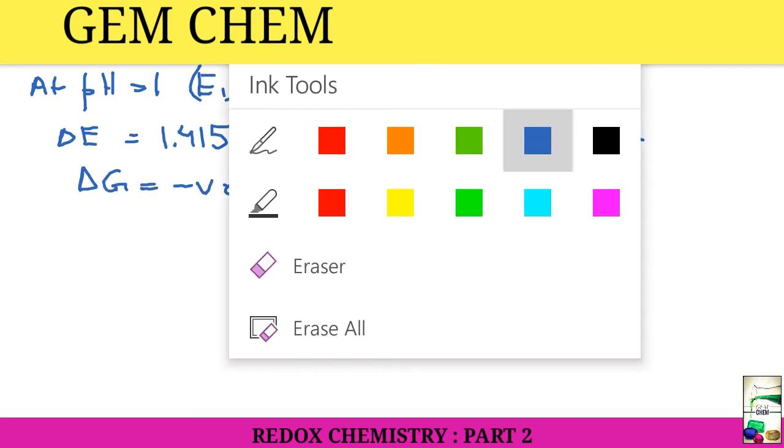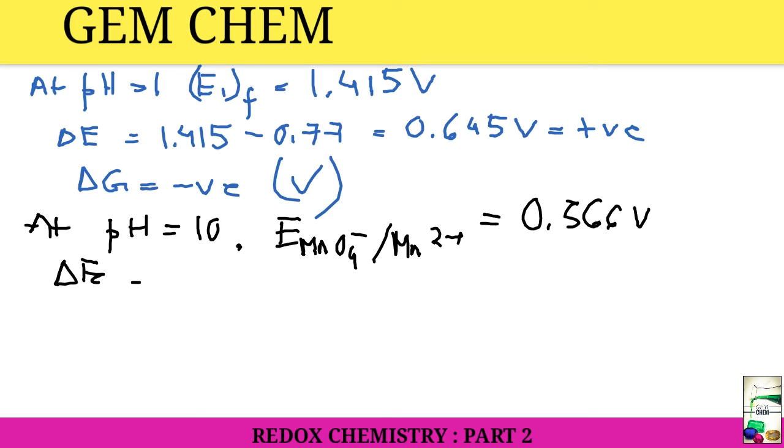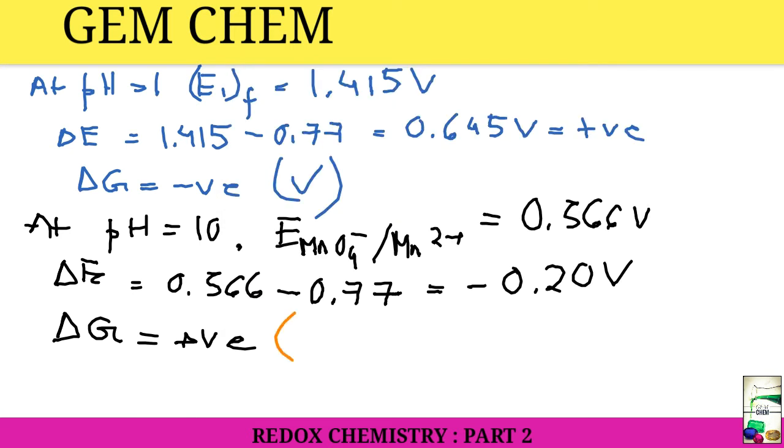But at pH = 10, we have seen the formal potential of MnO4⁻/Mn²⁺ to be 0.566 volt. Here ΔE will come as 0.566 - 0.77 = -0.20 volt, and here the ΔG value will come as positive, so this one will not be favored. That is why it is favored in acidic pH and not favored in alkaline pH.